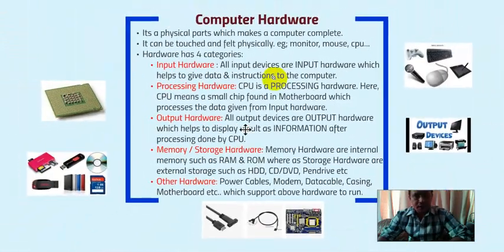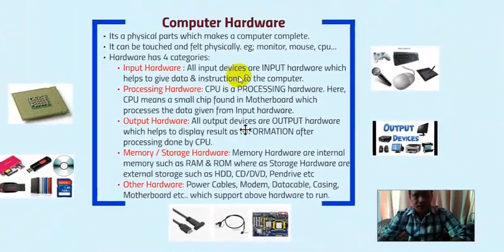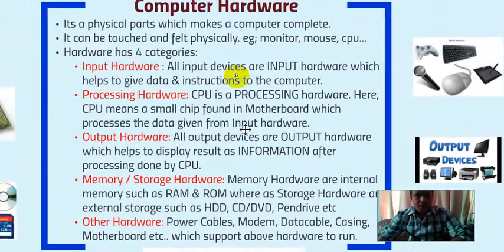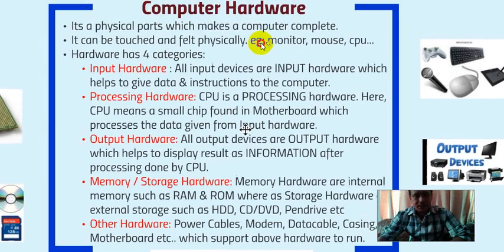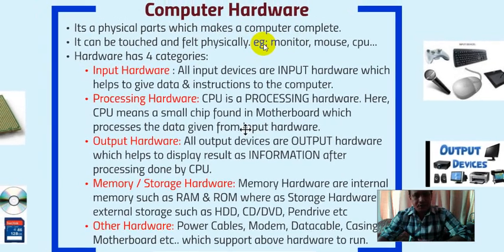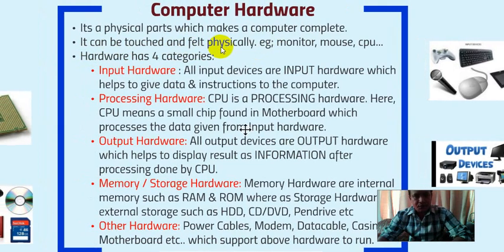Computer hardware is the physical part of the system which makes the computer complete — meaning it makes the computer work properly. It can be touched and felt physically. All the hardware we have, we can touch and feel it, like the keyboard, mouse, and monitor.